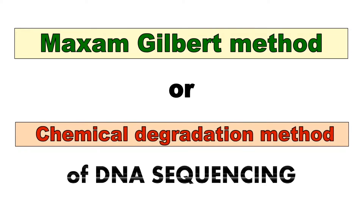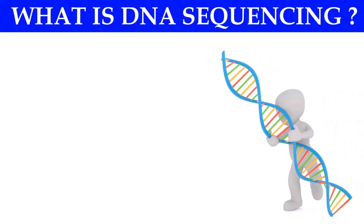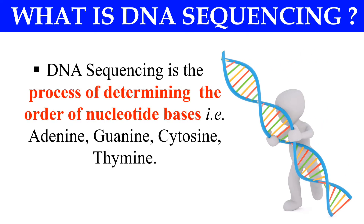In this video I will discuss the Maxim-Gilbert method, which is also known as the chemical degradation or chemical modification method of DNA sequencing. Before going into the method, it should be clear what DNA sequencing is. DNA sequencing is simply knowing the correct order of the four nucleotides present in DNA: adenine, guanine, cytosine, and thymine — just to know their correct sequence within the DNA fragment.